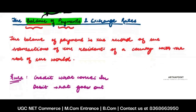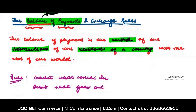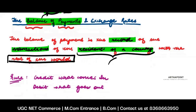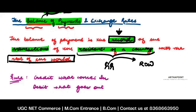The balance of payment is the record of transactions of the residents of the country with the rest of the world — whether they are ordering something from the rest of the world in terms of shoes, furniture, or they are transferring money. Somebody whose child is working outside and is transferring money back home — that is also a balance of payment transaction. Basically, balance of payment is a record of all such transactions where the residents of a country are dealing with the rest of the world.